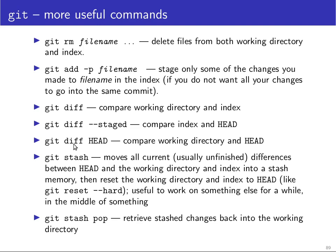If you want to compare what's in the working directory with the HEAD, you can just type git diff and then specify any commit you want — HEAD is just the name of the latest commit to the current branch. If you type git stash, you move all current differences between HEAD and the working directory into the stash, and afterwards the working directory is reset such that the working directory, the index, and the HEAD all have the same content. You've moved everything out of the way and have a clean start. Later, if you want to get back what you put in the stash, you just write git stash pop. The stash works like a stack, so there are push and pop commands — check the man page for git stash for more details.